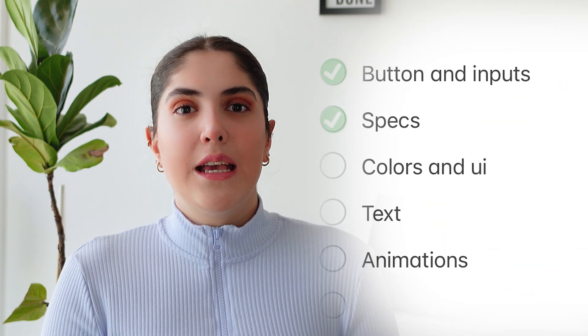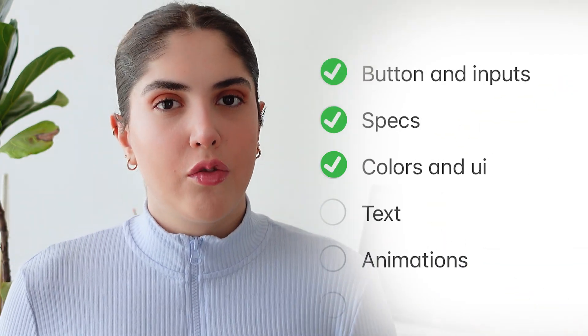The third thing is color and general UI. Sometimes colors may be off — for example, developers might use components or resources that have assigned colors that don't match. You want to make sure that the colors the developer used are exactly the colors you used in your design. Check that the colors are right in the text, in backgrounds, and in gradients.